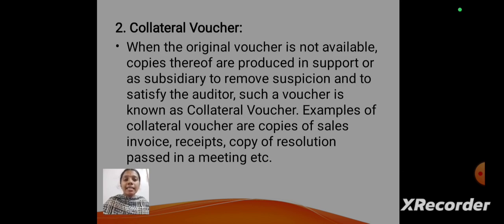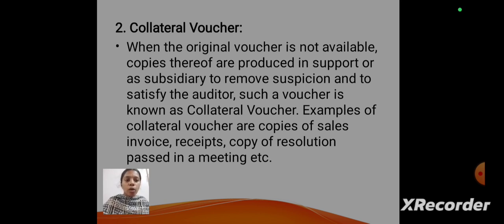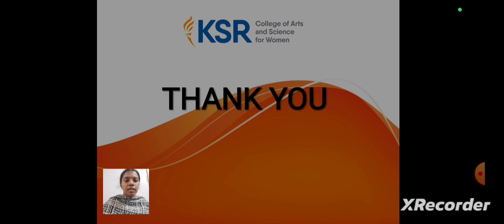Collateral voucher is a second type of voucher. When the original voucher is not available, copies thereof are produced in support or as subsidiary to remove suspicion and to satisfy the auditor — such a voucher is known as a collateral voucher. Examples of collateral vouchers are copies of sales invoice, receipts, and copy of resolution passed in a meeting. Thank you all.